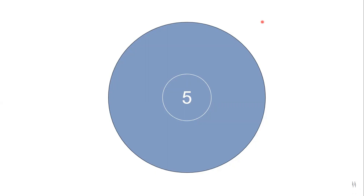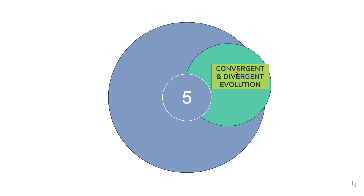Welcome to another video. Today we will be discussing five theories of evolution. The first theory we are going to discuss is convergent and divergent evolution. Let us focus on convergent evolution first.